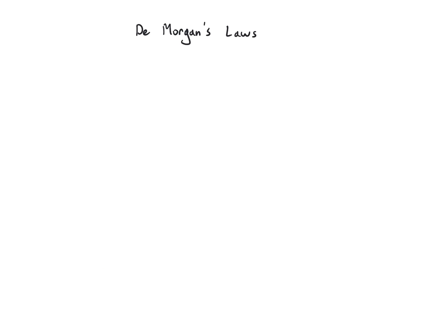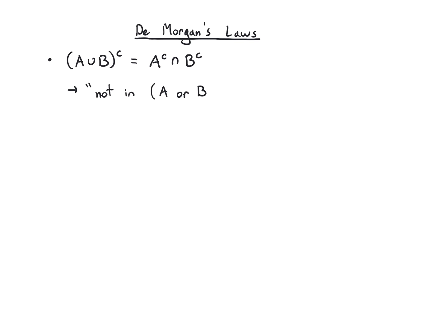De Morgan's laws — you've probably seen this in other contexts. If I want to take the complement of A union B, the complement applies to A and to B, and it also flips the union to an intersection. So the condition 'not in A or B' becomes 'not in A and not in B.'